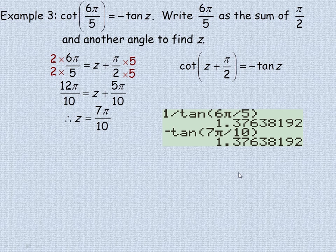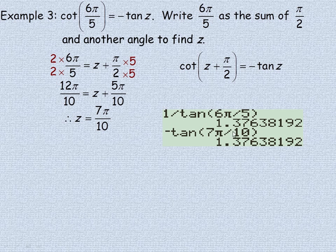To demonstrate with a calculator that these quantities are the same: evaluating the cotan of 6 pi over 5 — remember cotan and tan are reciprocals, so you evaluate 1 over the tan of that angle — gives 1.37638192. On the right, evaluating the negative tan of z, which is 7 pi over 10, gives exactly the same value to 8 decimal places. This demonstrates they are equivalent.